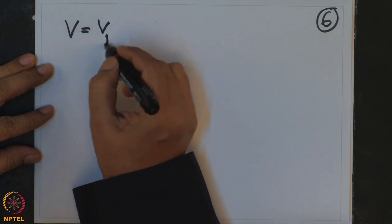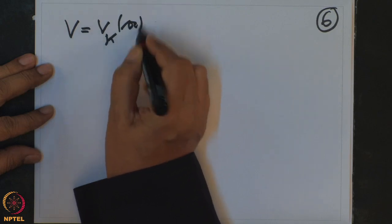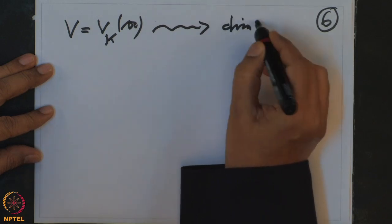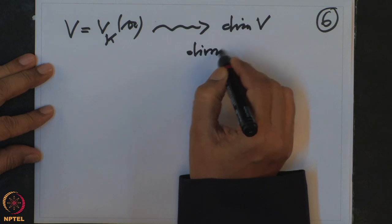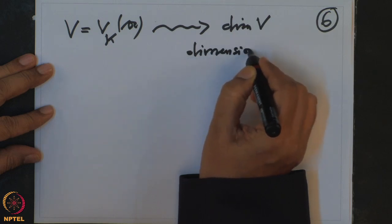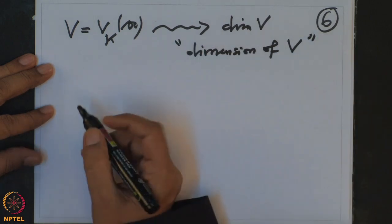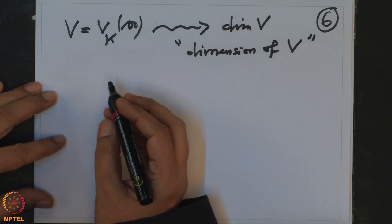Our problem is to attach a number to each algebraic set V = V_K(A), and we call this number the dimension of V. This dimension should have certain desirable properties. Let us see two examples that are very important to understand how we assign this number.